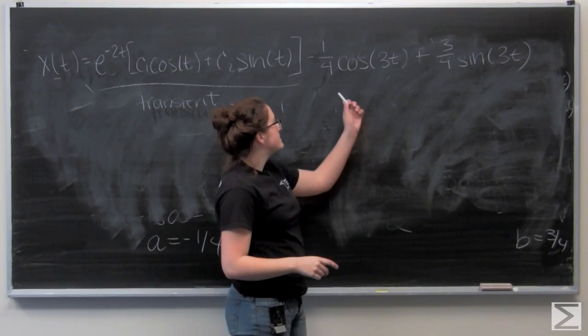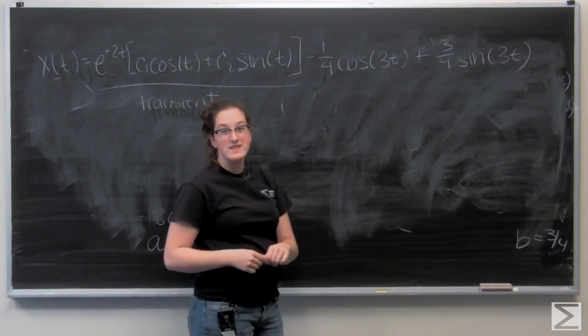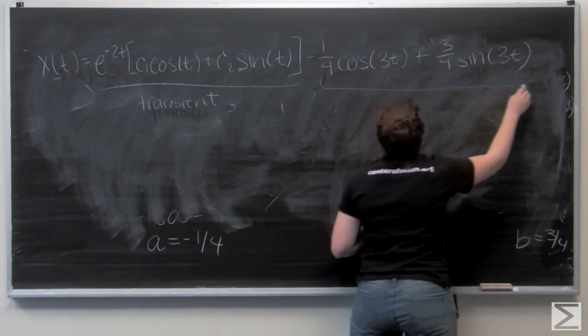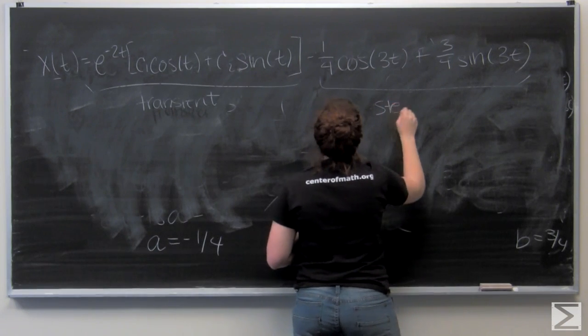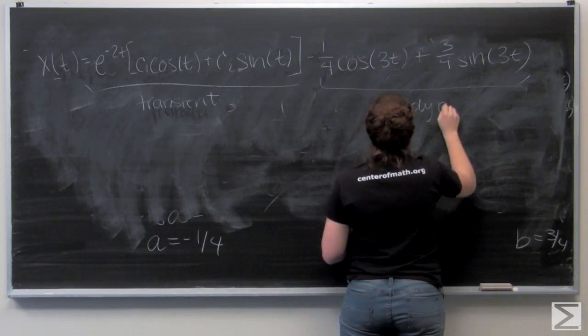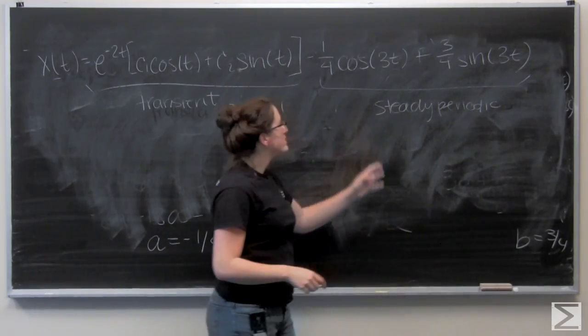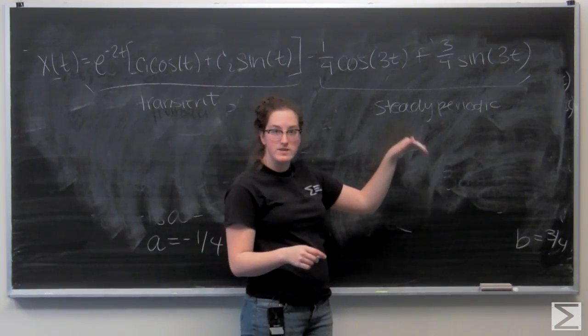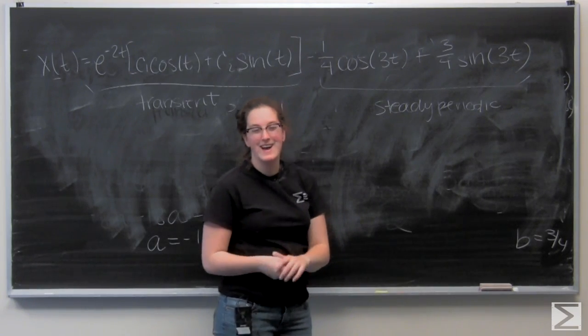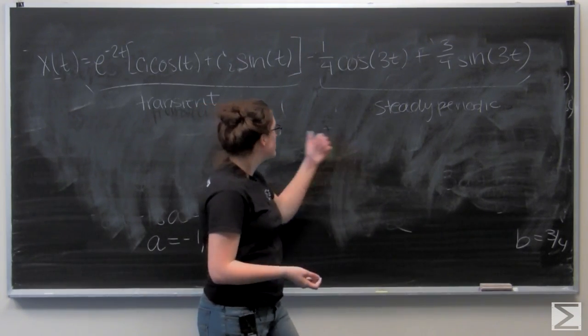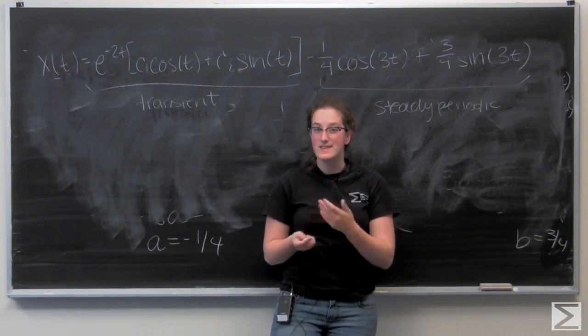Making this combination of sine and cosine the steady periodic portion. Because over time this will continue making its steady periodic motion. It's not going to die out. So those are our two portions of the solution, and that's our answer.